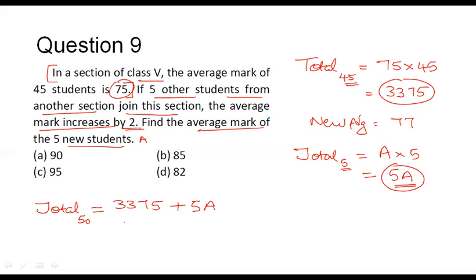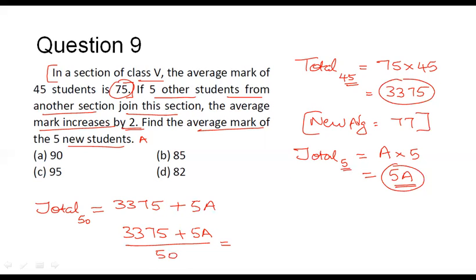Now let us find the average marks obtained by all 50 students. That is 3,375 plus 5A divided by 50. This average marks is 2 more than the original average of 75, so 75 plus 2 equals 77. We have already identified that value.